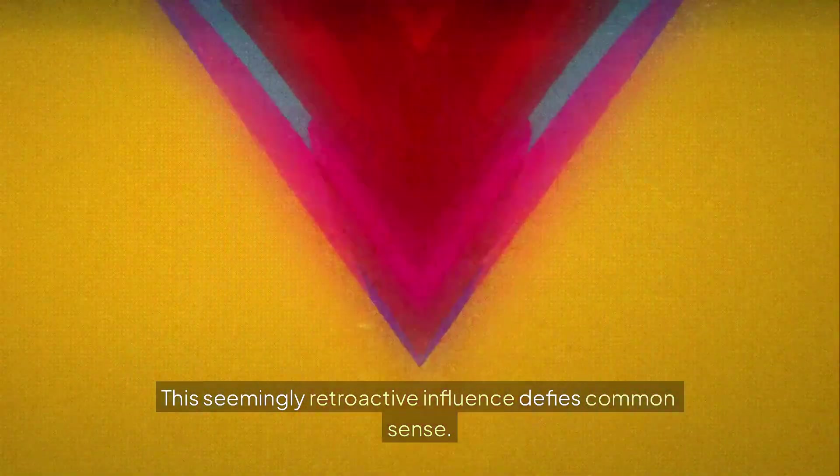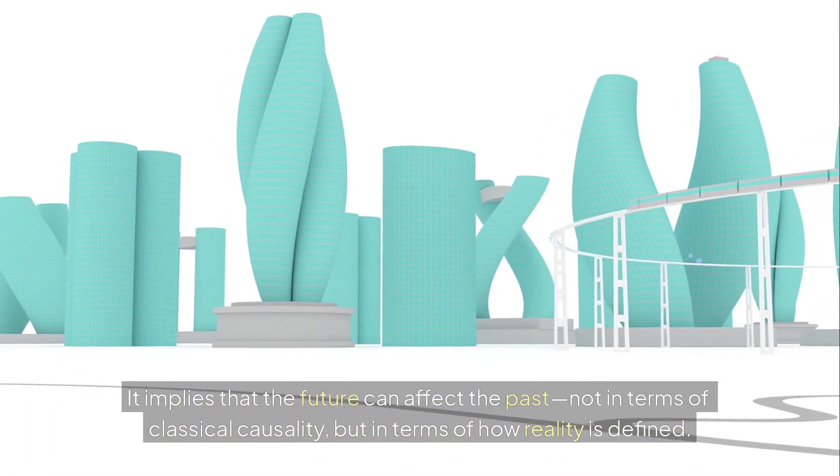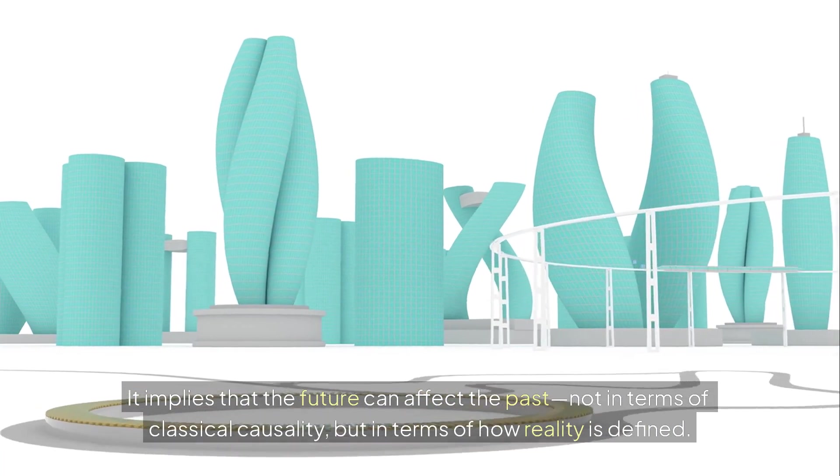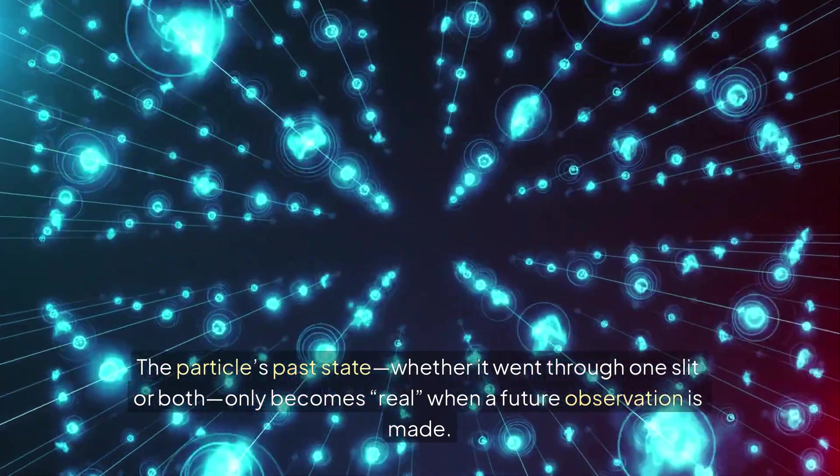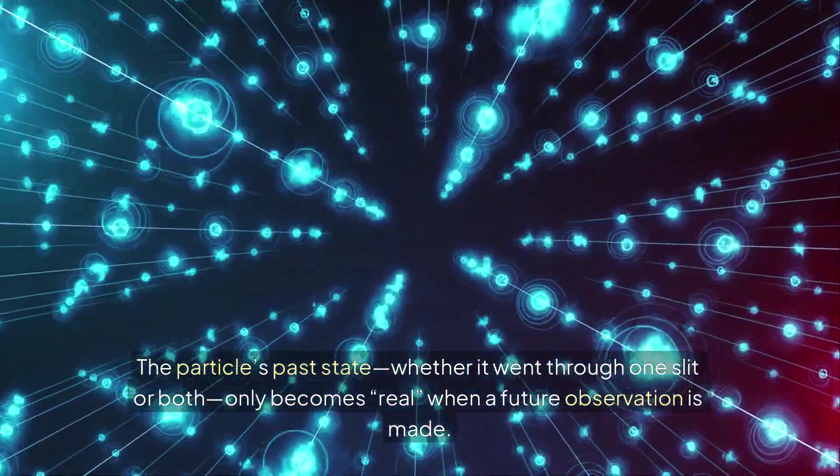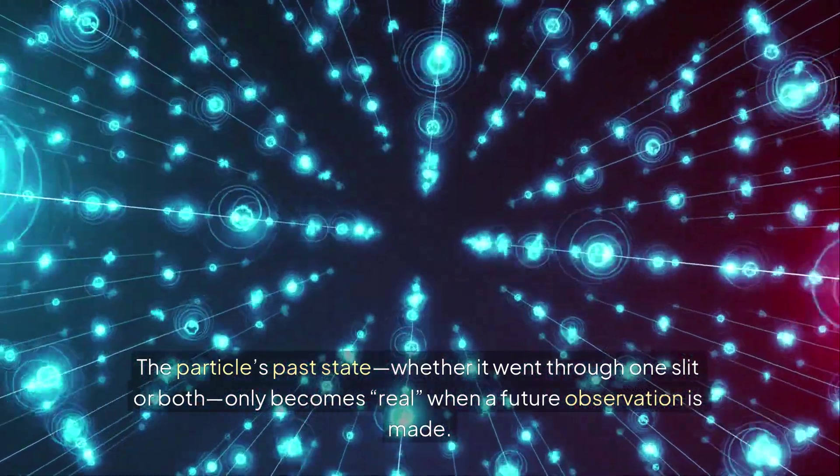It's as if the particle knows whether you're going to observe it, not just in the present but in the future. This seemingly retroactive influence defies common sense. It implies that the future can affect the past, not in terms of classical causality, but in terms of how reality is defined. The particle's past state, whether it went through one slit or both, only becomes real when a future observation is made.